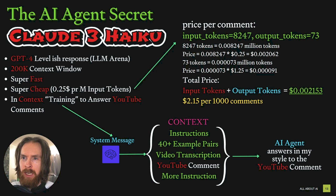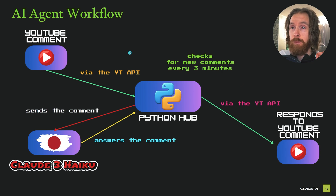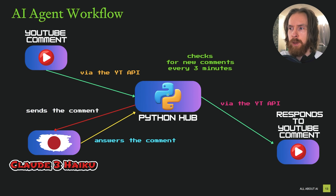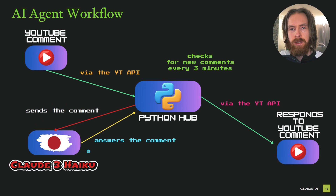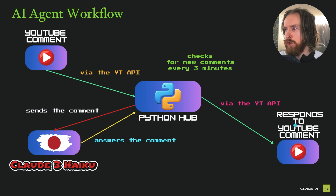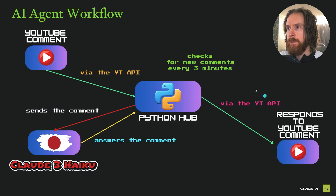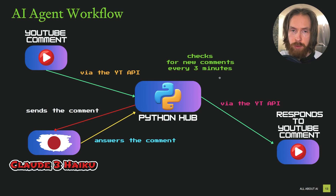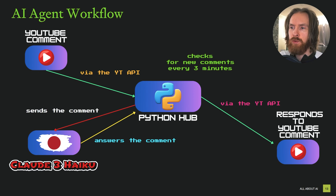I'm definitely going to be building out more of this now to try to help me with my business. If you look at the workflow here, it's a pretty simple setup. We have a YouTube comment fed via the YouTube API to our Python code. It sends the comment to Claude 3 Haiku. With all the in-context training, we answer it, and that is fed back to YouTube to respond to that comment via the YouTube API. I set this system up to check for new comments every three minutes to stay on quota. So if you leave a comment, you will get an answer back in at least three minutes.